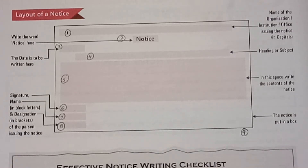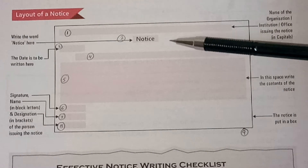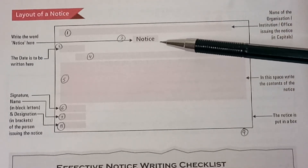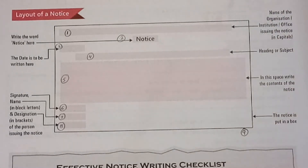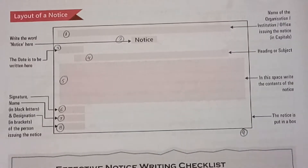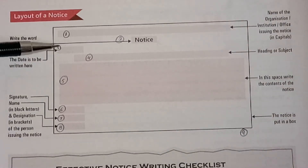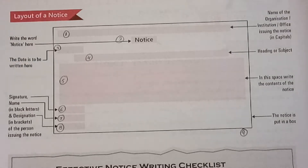The second thing you have to write is the word 'NOTICE'. This should be written here. After that, you should not forget to write the third thing, that is, the date — on which date you are writing the notice.